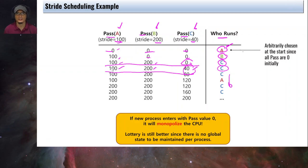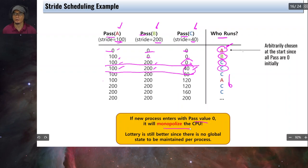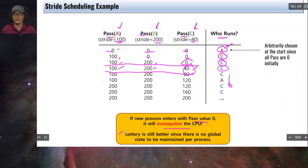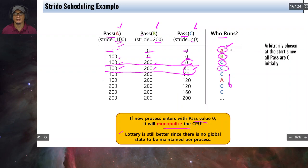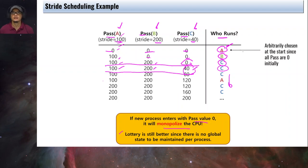The main issue with stride scheduling is that if a new process enters with a pass value of zero, it will monopolize the CPU because it will always have the lowest pass value. In this scenario, lottery scheduling is still better since there is no global state to maintain per process. With stride scheduling we must maintain both the stride and the pass value, which are overhead — so lottery scheduling is better in this case.